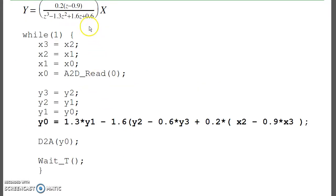For example, if this is my filter, the way you implement it is: cross-multiply, move terms to the right (which gives a sign change). y(k) = 1.3*y(k-1) - 1.6*y(k-2) - 0.6*y(k-3) + 0.2*x(k-2) - 0.9*x(k-3). You can almost write the difference equation in your program straight from the transfer function.